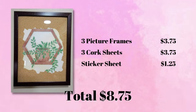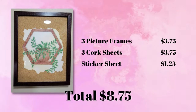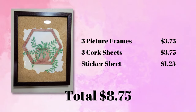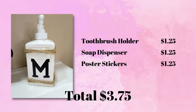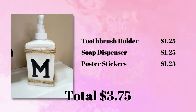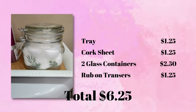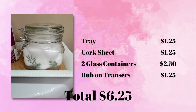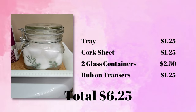For the three picture frames I had three frames, three cork sheets, and one sticker sheet for a total of $8.75. For the toothbrush holder and soap dispenser I had those two items plus a pack of poster stickers for a grand total of $3.75. And for the tray on the back of the toilet I needed one tray, one cork sheet, two glass containers, and a pack of rub-on transfers for a total of $6.25.